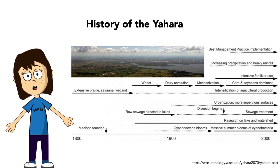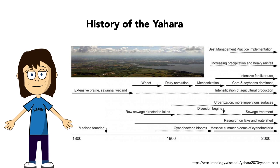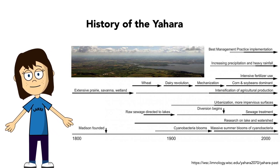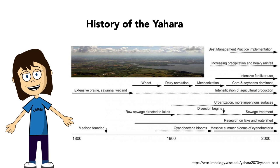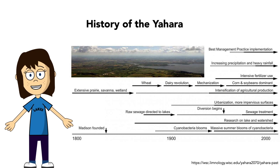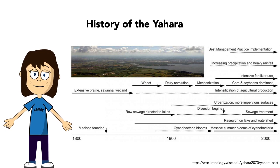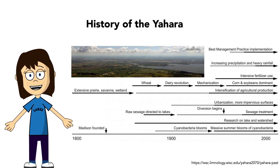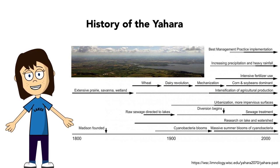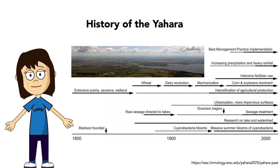This conversion from erosion-resistant prairie sod to tilled, bare ground led to substantial erosion. Farmers cultivated primarily wheat because it was relatively easy and cheap to produce, and grist mills produced flour for mostly local markets until the railroads enabled exportation in the 1850s. By the 1870s, wheat disease, market pressure, and soil nutrient depletion caused by continuous wheat coverage had driven Yahara farmers to diversify their crops.